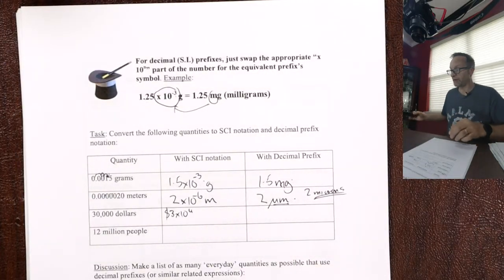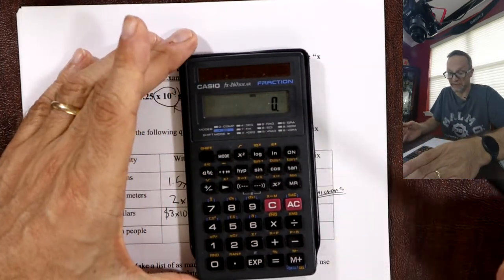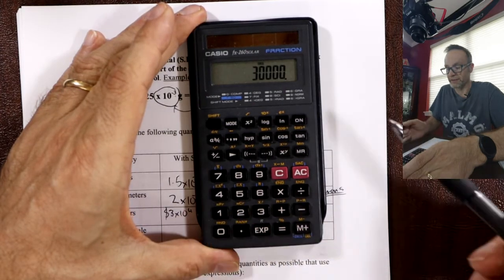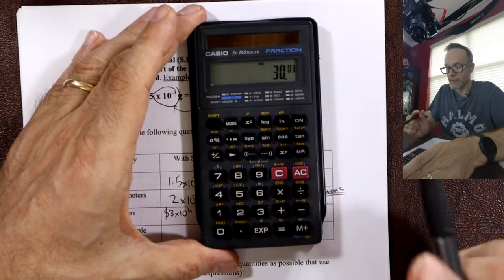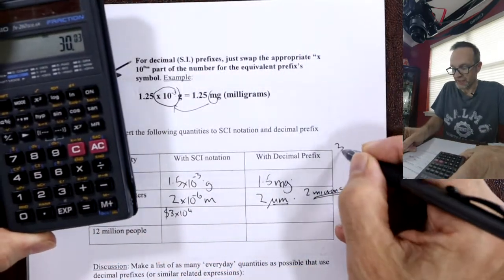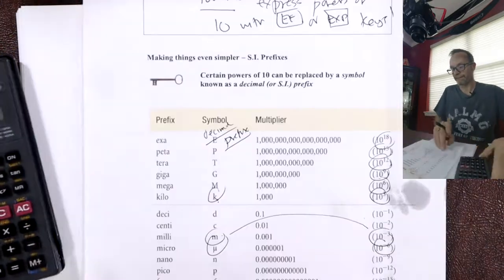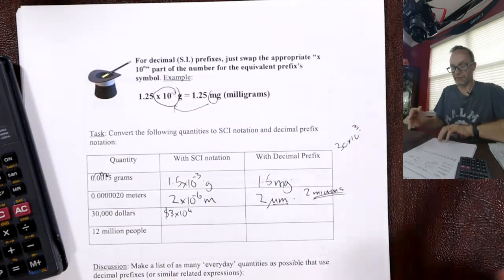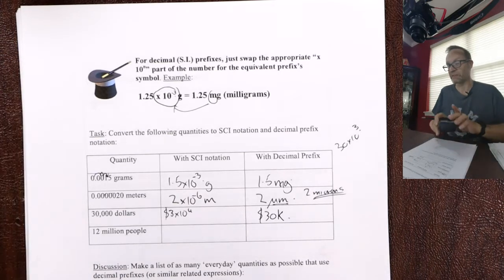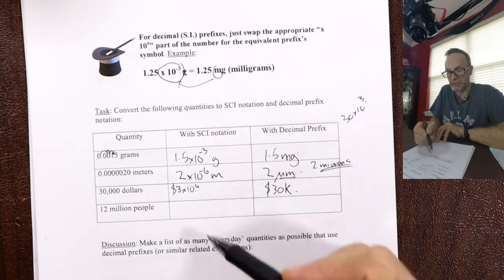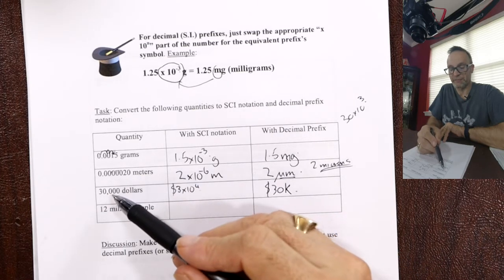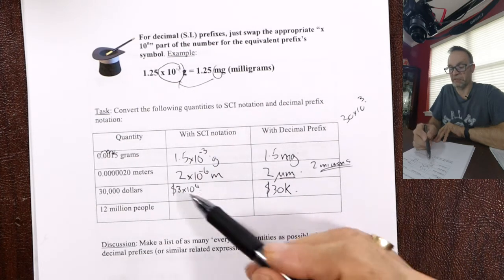The trick is the engineering function on the calculator. Enter 30,000, press the engineering key, and you get 30 times 10 to the 3. That's the same as 3 times 10 to the 4. Then look up 3 — that's kilo. So $30,000 is 30 kilodollars. You often see that abbreviation in job ads.